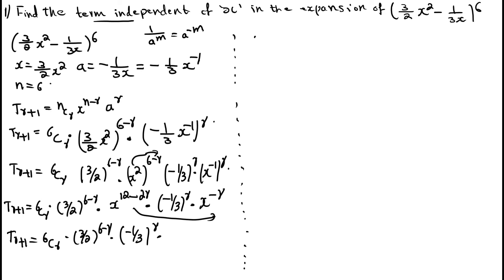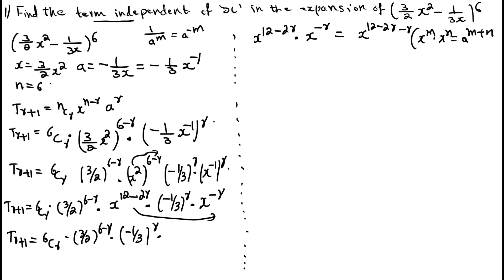Combining the x terms: x^(12-2r) · x^(-r) = x^(12-2r-r) = x^(12-3r), using the formula xᵐ · xⁿ = x^(m+n). So Tᵣ₊₁ = ⁶Cᵣ · (3/2)^(6-r) · (-1/3)^r · x^(12-3r). Take this as equation (★).